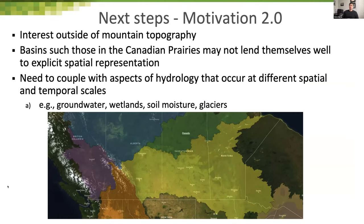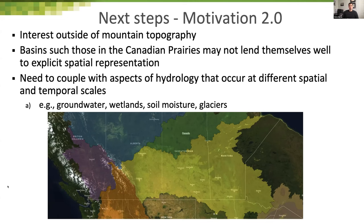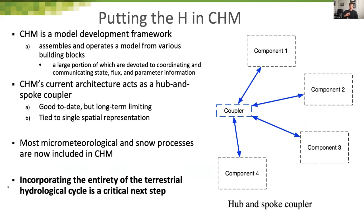Longer term, putting the 'H' in CHM: there's interest beyond mountain topography. Basins like the Canadian Prairies may not lend themselves well to explicit spatial representation — explicitly representing every small pond has compute and initial condition limitations. The idea is to incorporate different types of spatial representations such as HRUs and triangulations, and to have different aspects of the hydrological system working together at different spatial and temporal scales — groundwater interacting with wetlands, soil moisture, glaciers — all needing simulation at different resolutions.